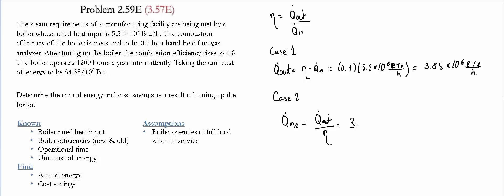So that was 3.85 times 10 to the 6 BTU per hour divided by 0.8 and that gives us 4.8125 times 10 to the 6 BTU per hour.